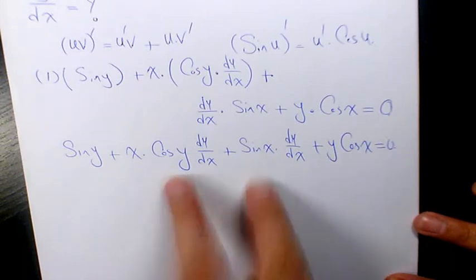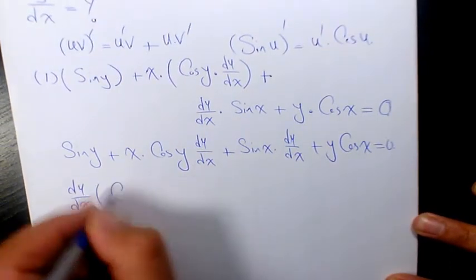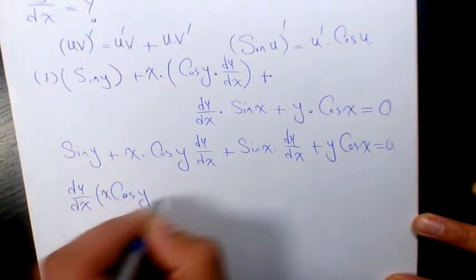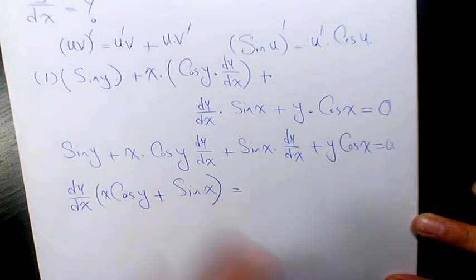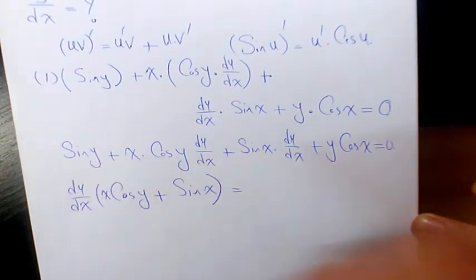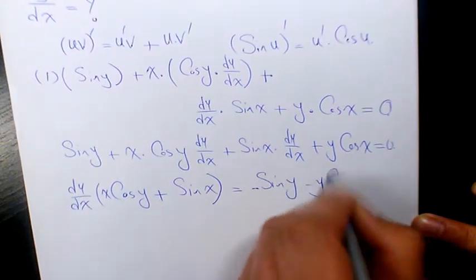Now we have these two on this side. Factor out dy over dx, which is x times cosine y plus sine x, equals, I move these two to the right hand side, negative sine y minus y cosine x.